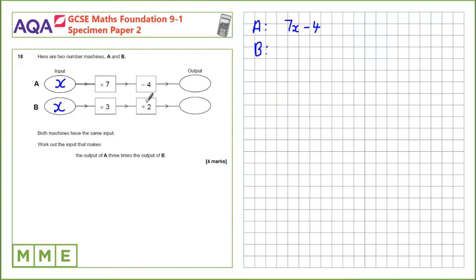And for b, we have x times 3, which is 3x, then plus 2. We want the output of a to be 3 times the output of b, so we'll set up this equation. 7x minus 4 is 3 times the output of b, 3x plus 2.